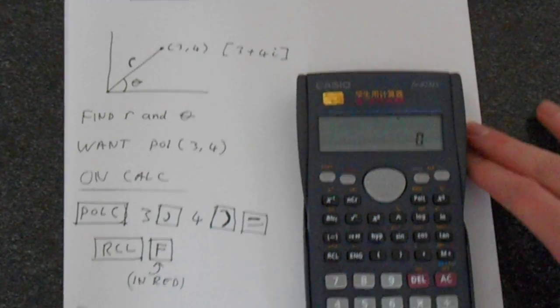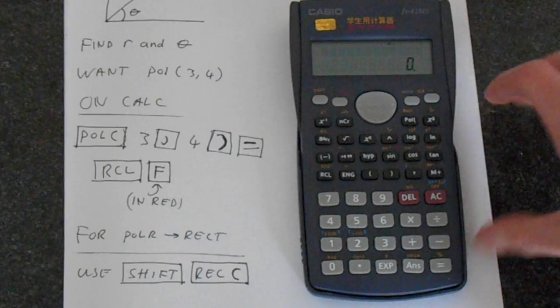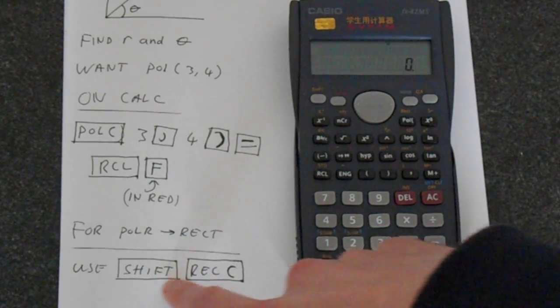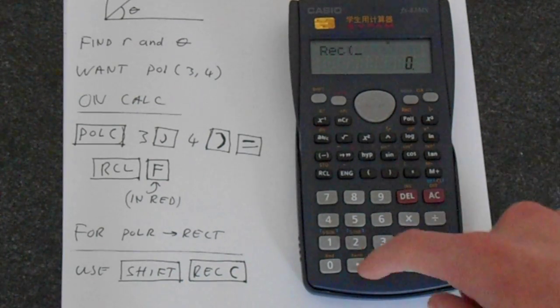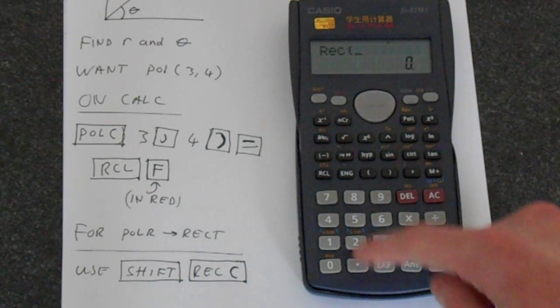Of course, if you wanted to go the other way, just follow exactly the same steps, except for using the rect instead of the polar. So that's shift, rect, so say we put in what we had before.